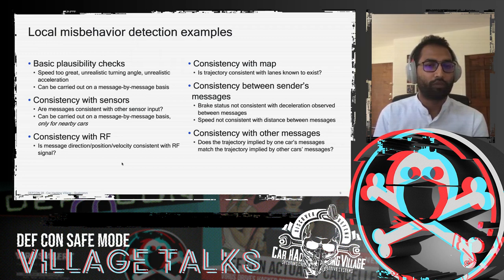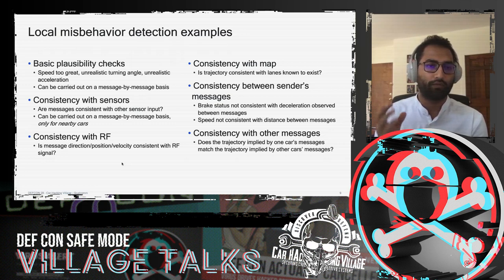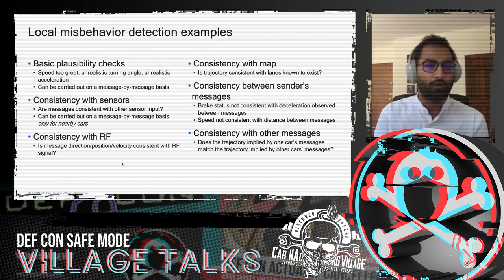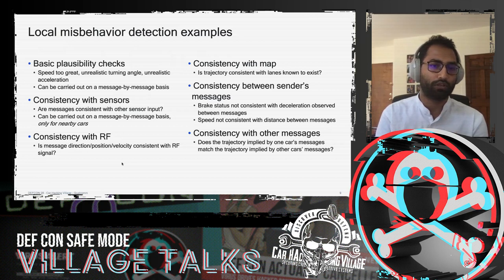Then we look at consistency with sensors. Whatever speed is reported in the BSM, compare it with radar tracking data. This can be done per message but only for nearby vehicles in line of sight, since radar and cameras cannot work in non-line-of-sight situations. Similarly, we compare RF characteristics — position, direction, velocity — for consistency on the RF side versus V2X.